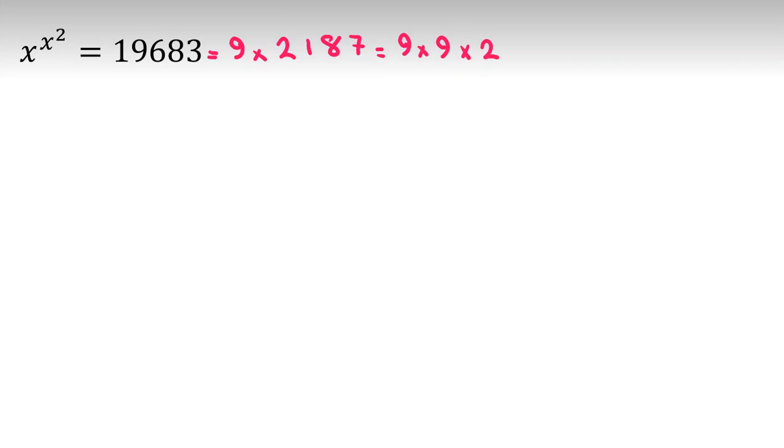Dividing again by 9: 2 times 9 is 18, 4 times 9 is 36, 3 times 9 is 27. This gives us 243, which is 3 to the 5th power. And 9 is 3 squared.